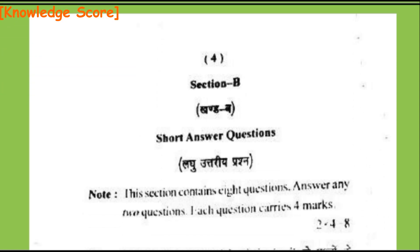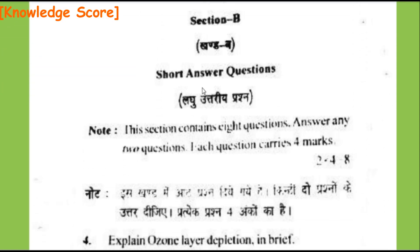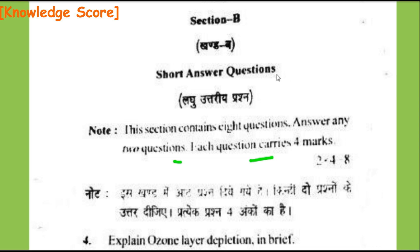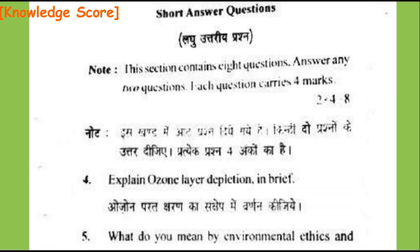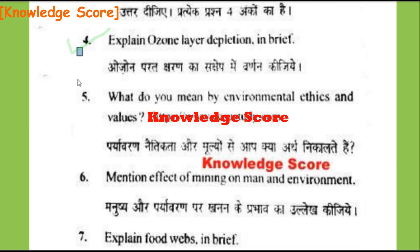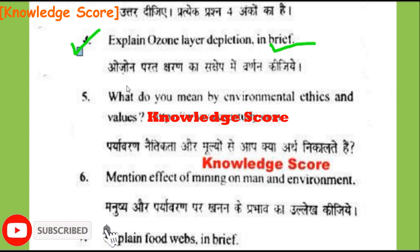Now I will discuss Section B — short answer questions (Laghu Uttariya Prashna). This section contains 8 questions; answer any 2 questions. Each question carries 4 marks — 2 into 4 equals 8. Section B carries 8 marks total. Question 4, Section B: Explain ozone layer depletion in brief.